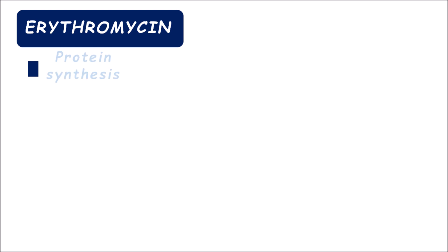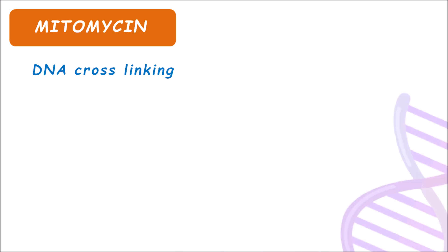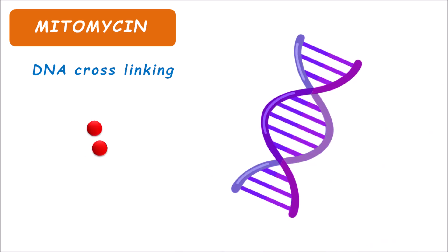The third drug, erythromycin, also inhibits protein synthesis within the bacteria but by a different mechanism. It binds to the 50S subunit and inhibits the transfer of the peptide chain from one site to the other — so erythromycin inhibits translocation. The fourth drug, mitomycin, is an anti-cancer agent. It produces cross-linking within the DNA, acting as an alkylating agent by binding to nucleophilic sites on the DNA, producing cross-linking between DNA strands, decreasing DNA replication and thereby inhibiting cell proliferation.